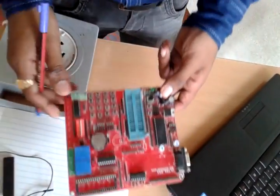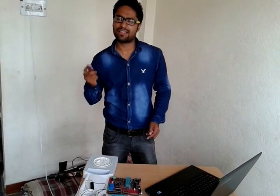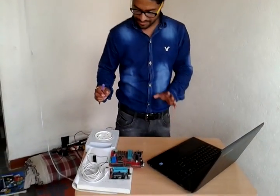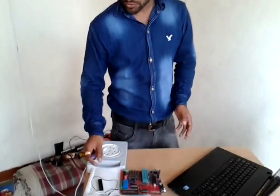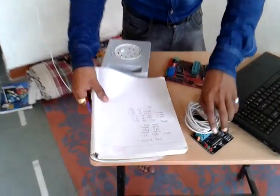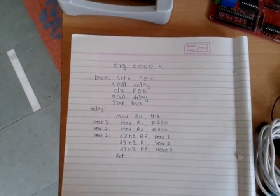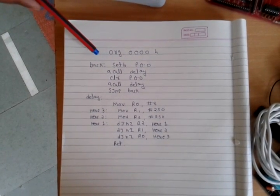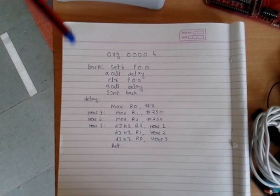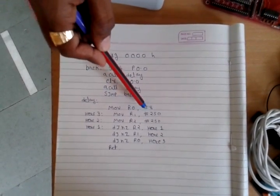Now we switch over to the second step, which is programming. Programming is the most important step for the interfacing. Without programming you cannot interface anything with the 8051. If you want to interface anything — like an LCD, like an LED — you need programming. I am showing you the basic program written here. With the help of this 3 to 4 line program you can interface the LED. This delay function generates a delay of 1 second.